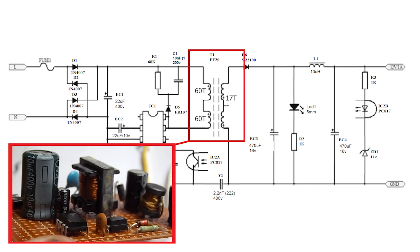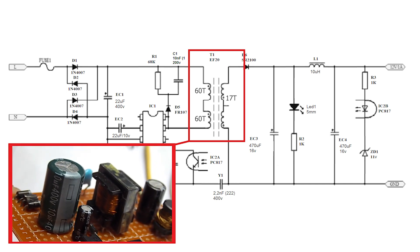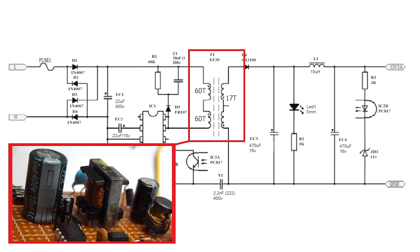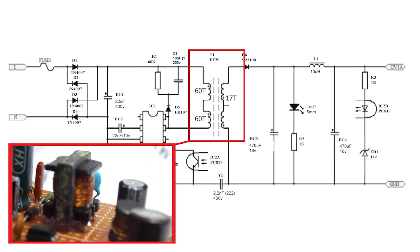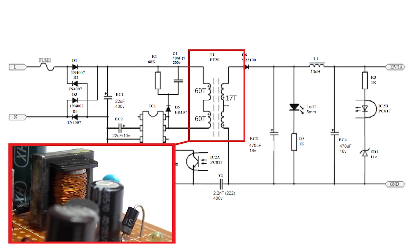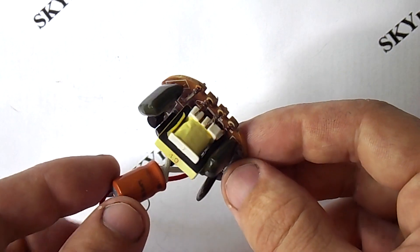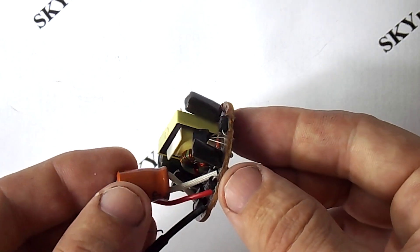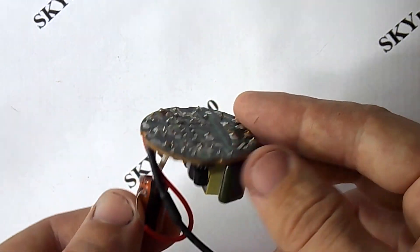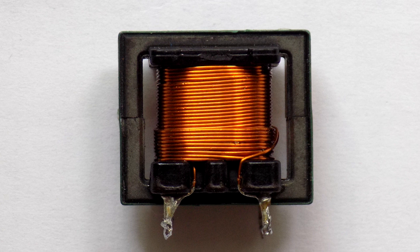T1 is a transformer, size E20. It has only two windings primary and secondary. The primary winding consists of 120 turns divided into two half windings of 60 turns. There are 17 turns in the secondary winding. I found a core of a suitable size in the ballast of a fluorescent energy saving light bulb. I solder it out and take it apart. A coil is wound on the core, which I remove and debug to the side.